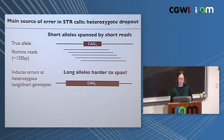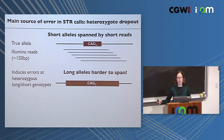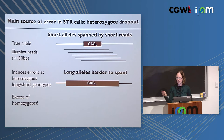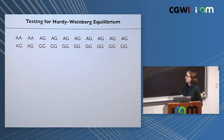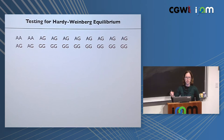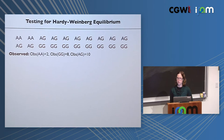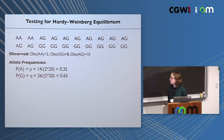This heterozygote dropout causes an excess of called homozygotes — a problem well-suited for Hardy-Weinberg testing. For a standard SNP example with A and G alleles, we can write down observed genotype frequencies, calculate allele frequencies, and compute expected genotype frequencies: p² for AA, q² for GG, and 2pq for heterozygotes. A chi-squared test can then confirm whether observed frequencies match Hardy-Weinberg expectations.